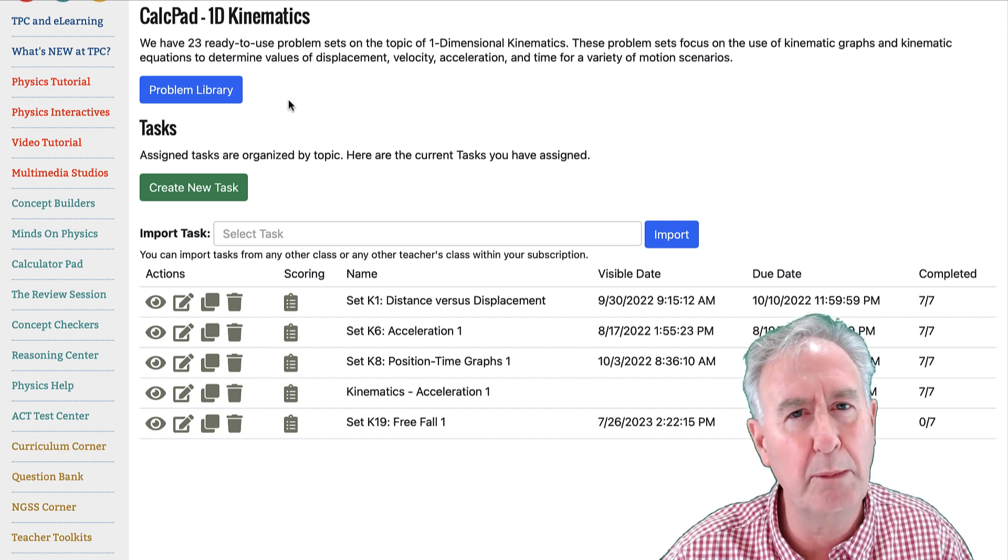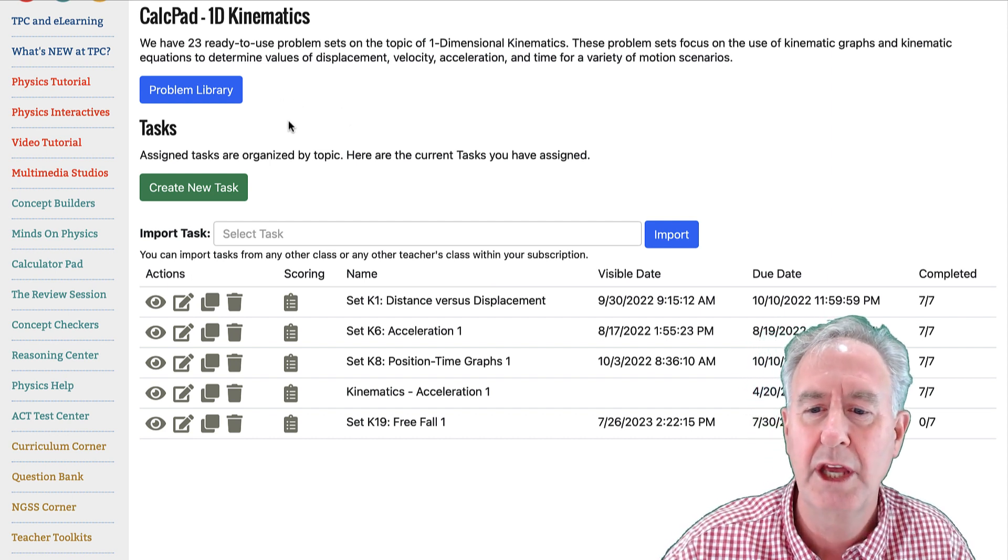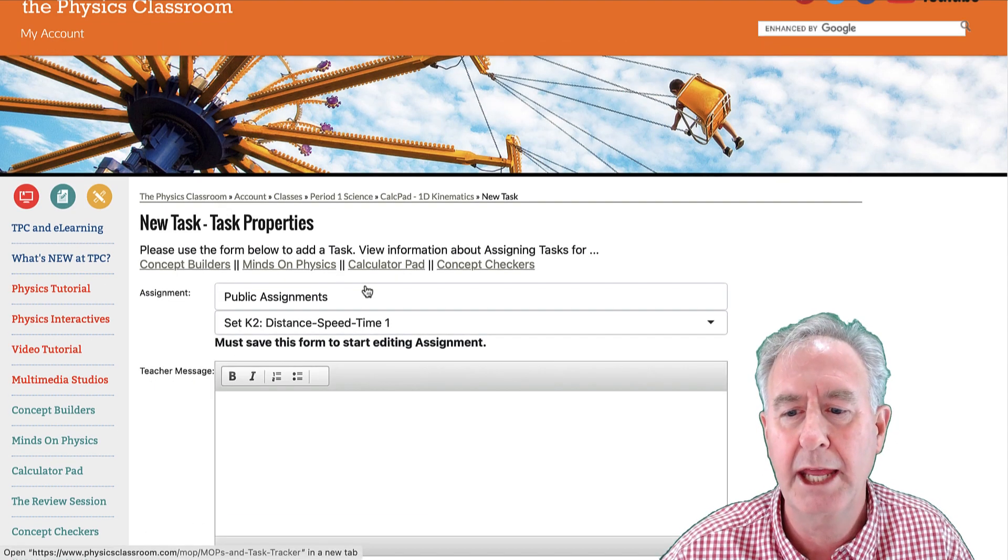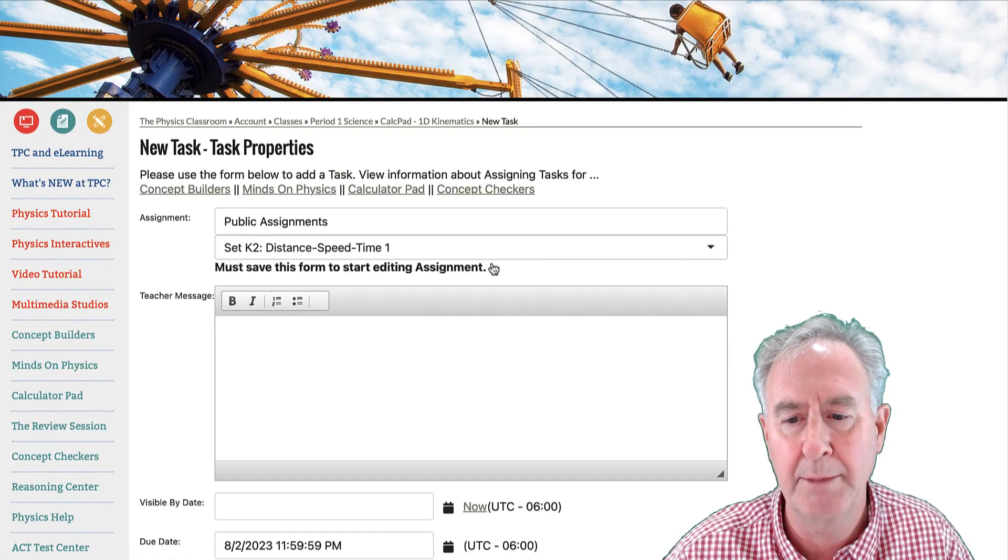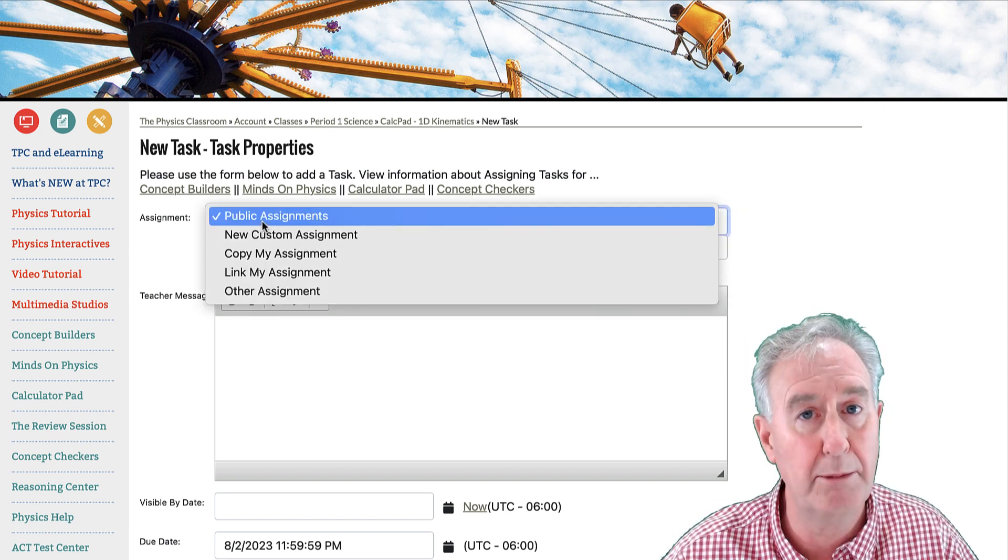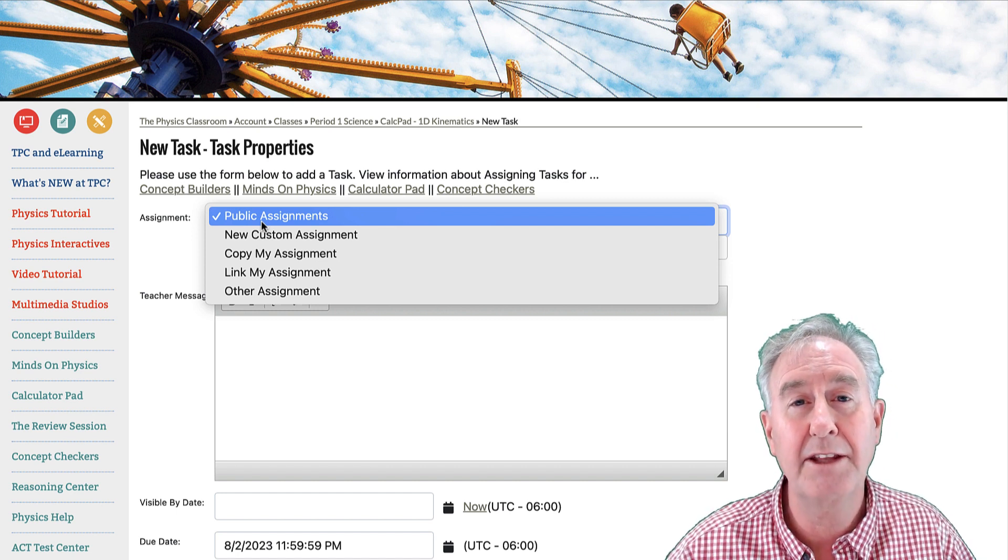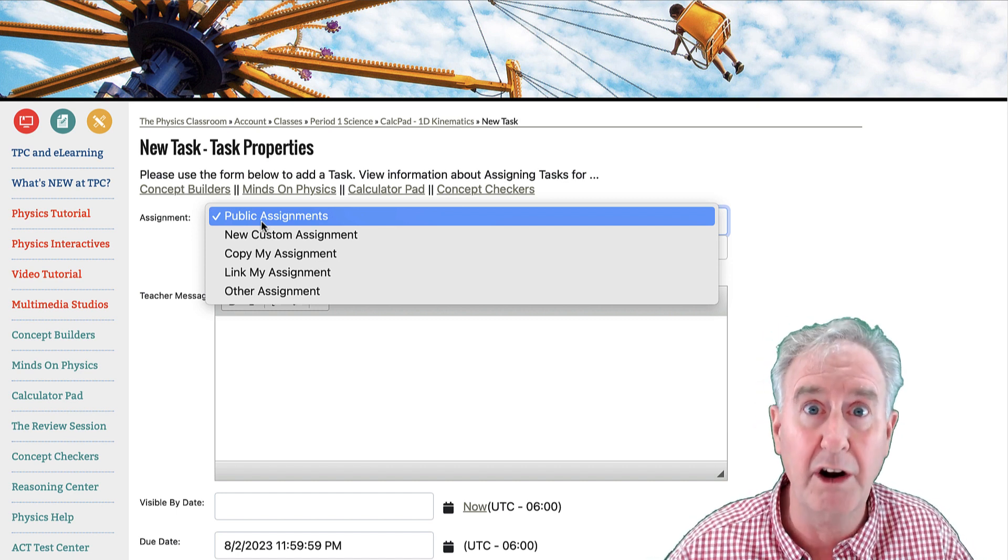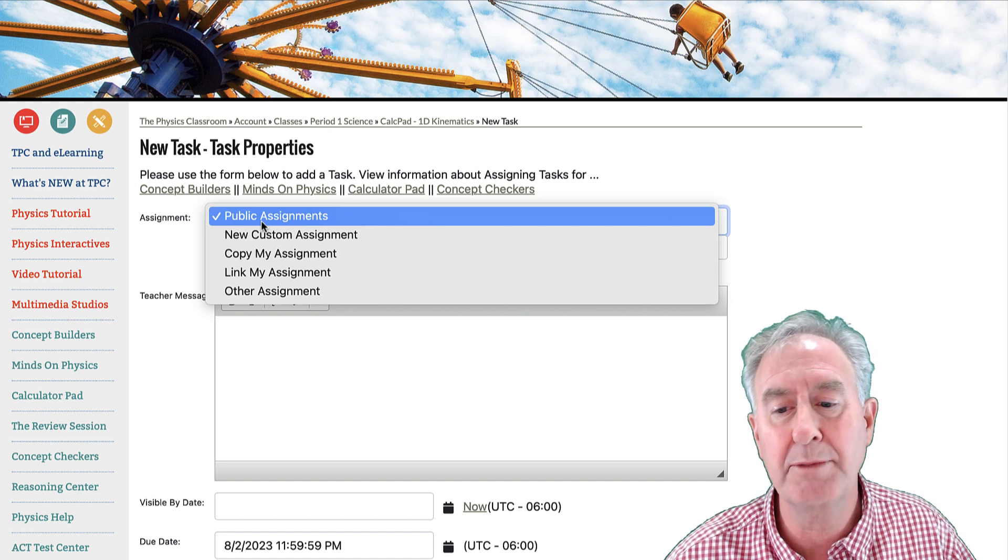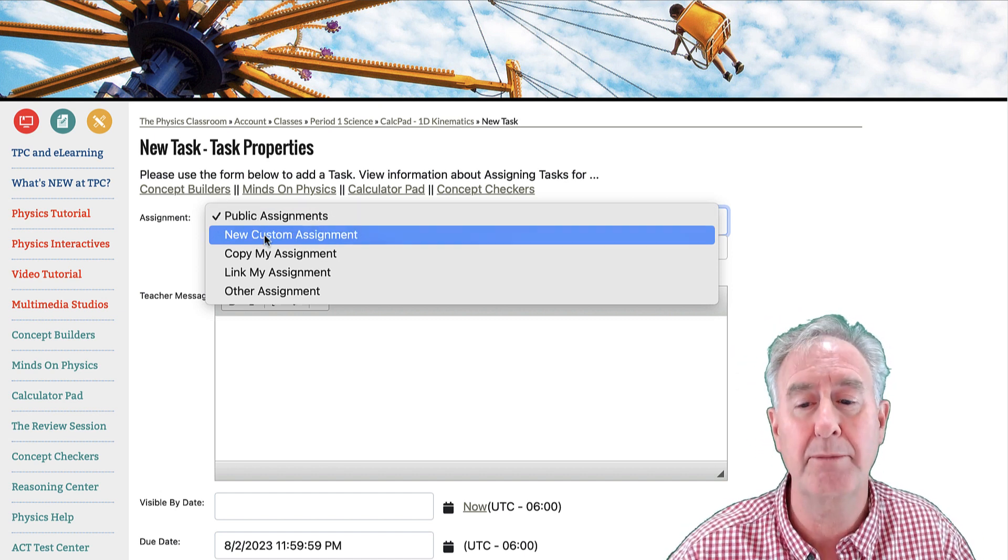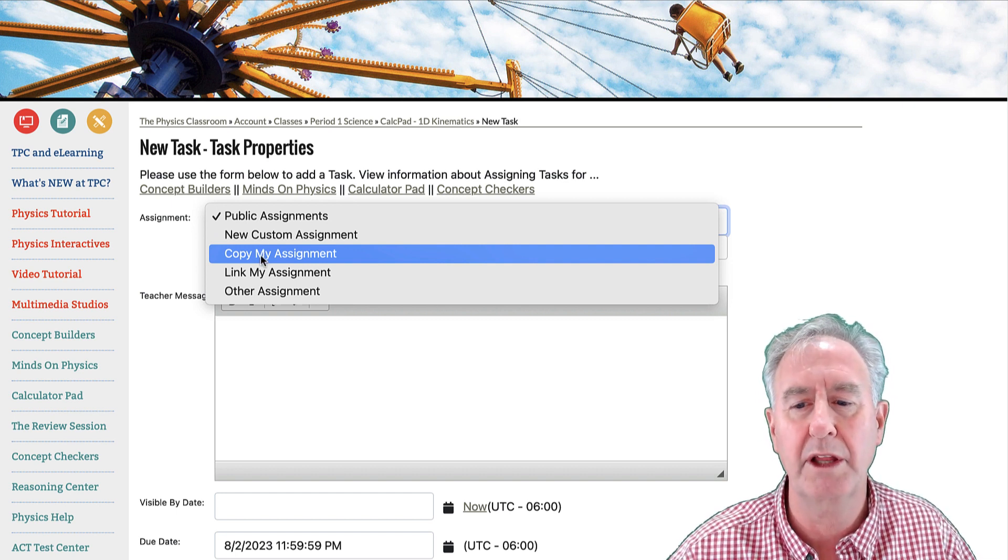So I'm back on the CalcPad 1D kinematics page. There you see create new task. I'm going to click on that button, and when I do, the usual pops up. And this top menu has several options. Public assignments means create a new CalcPad problem set that is made from one of our assignments. New custom assignment is what I want to do. So I'm going to create a custom assignment of my own. The other options I'll talk about real quickly.